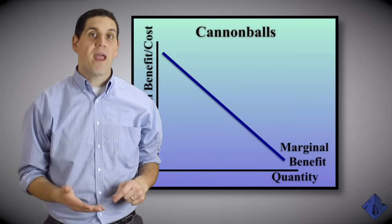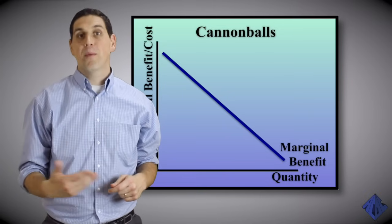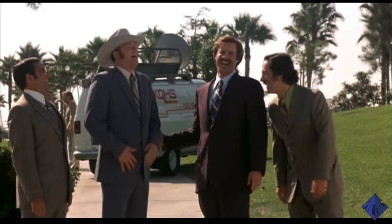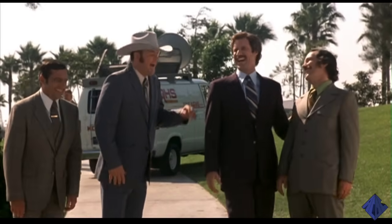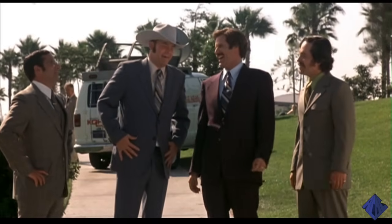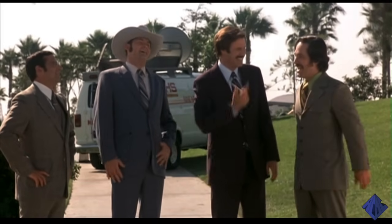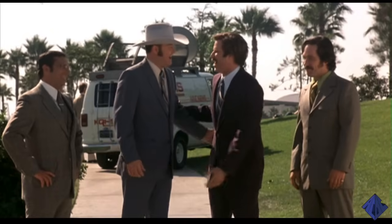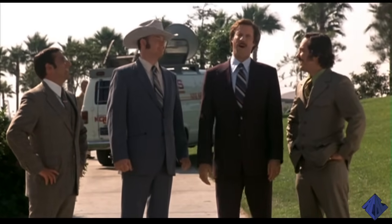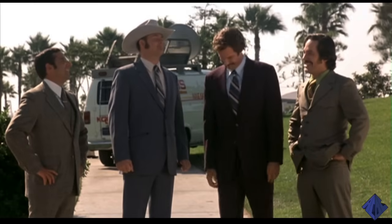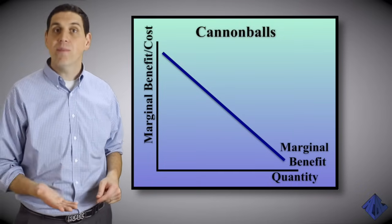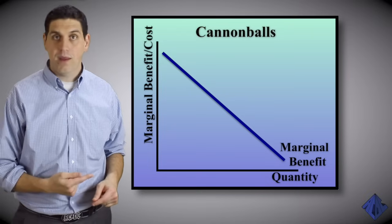This law explains a lot of human behavior, and it's the reason why jokes aren't perpetually funny. The point is, the marginal benefit for doing cannonballs in a pool is downward sloping.